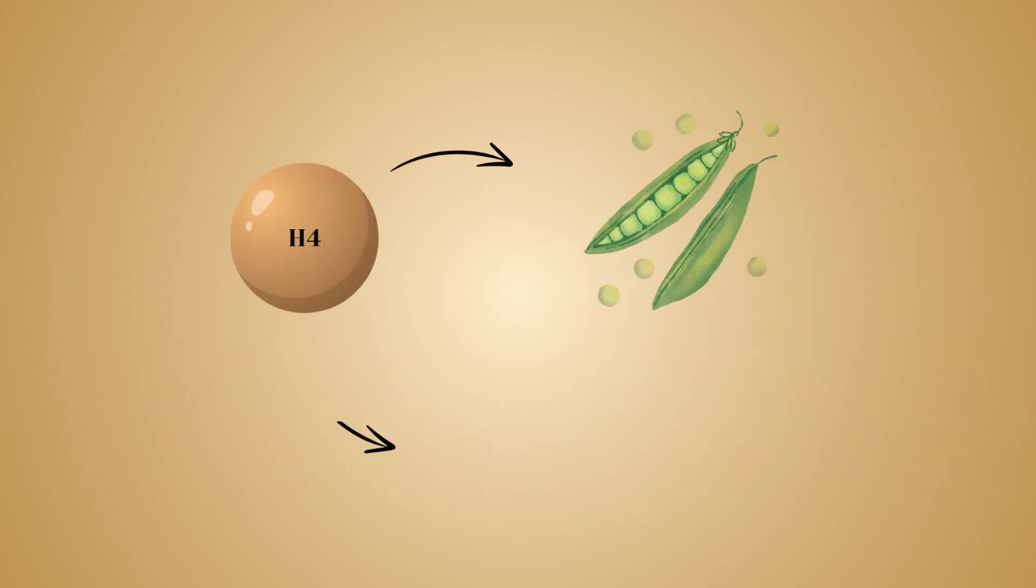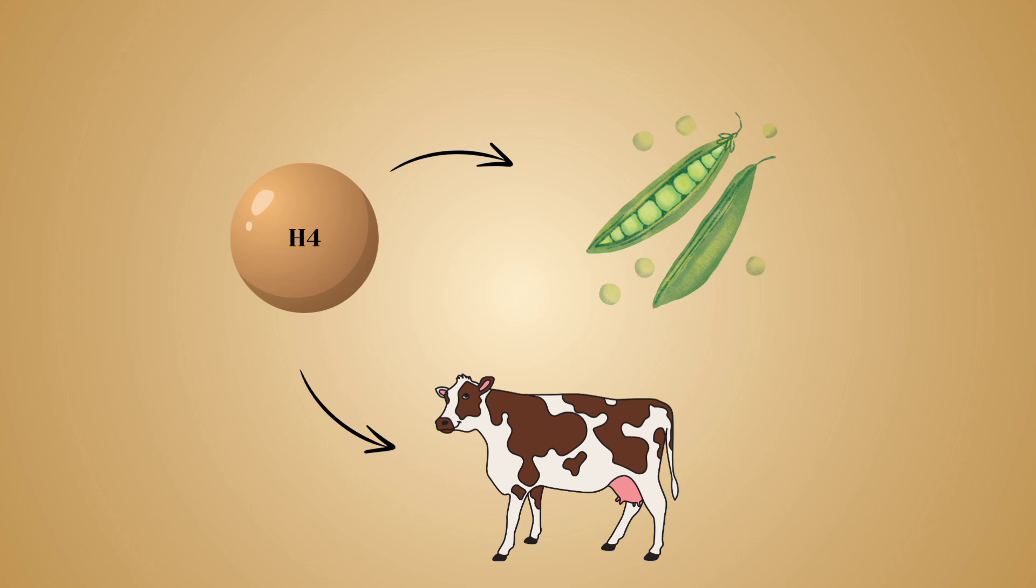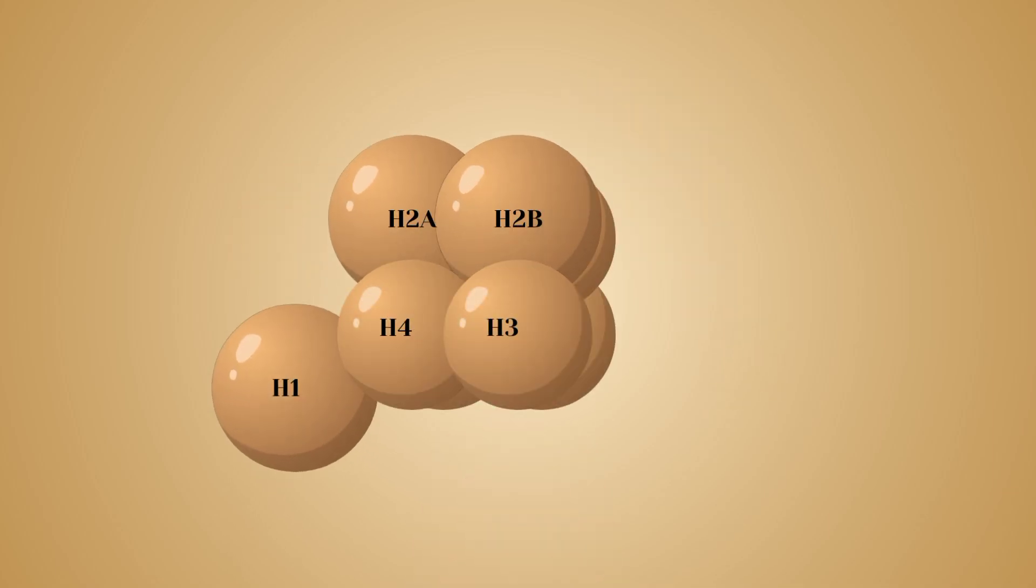For example, in the H4 histones of peas and cows, only two of the 102 amino acid residues differ, and only eight differ between the H4 histones of humans and yeast. Whereas histones such as H1, H2A, and H2B show less sequence similarity among eukaryotes.